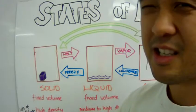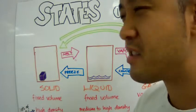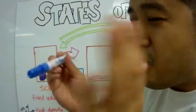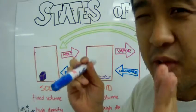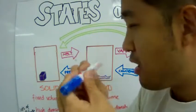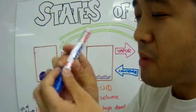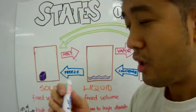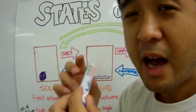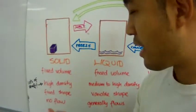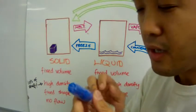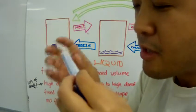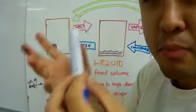So what is a solid? Well, a solid is something that has a fixed volume. It does not move around. You can sit on it softly — not very hard — and it will always maintain its shape. It doesn't change. Also, solid has a high density because the particles in there are very closely packed, so it has more particles per volume.